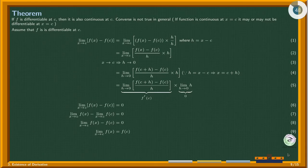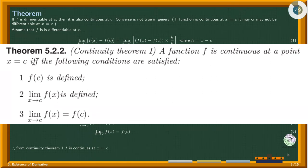Finally, we get the limit of f as x approaches c equals f(c). From the continuity theorem 1, f is continuous at c.